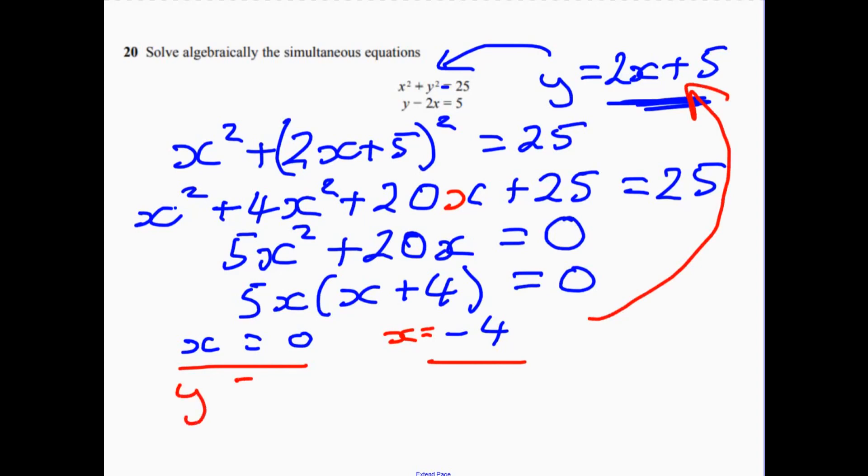So that would give me... So when x is 0, y would have to be 5, so there's one possible solution. And then the second possible solution, if I substitute minus 4 into that, that gives me minus 3. So there's our second solution.